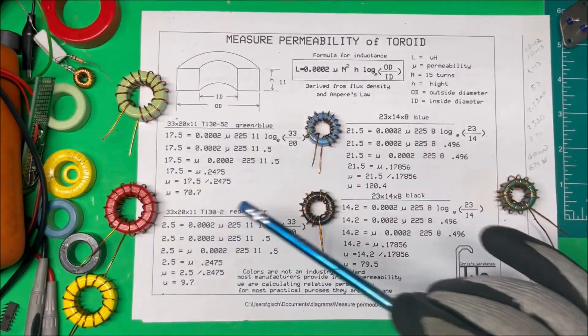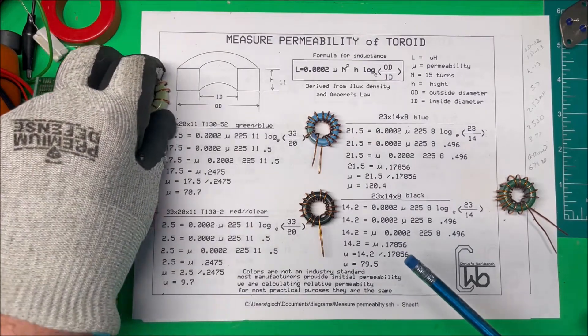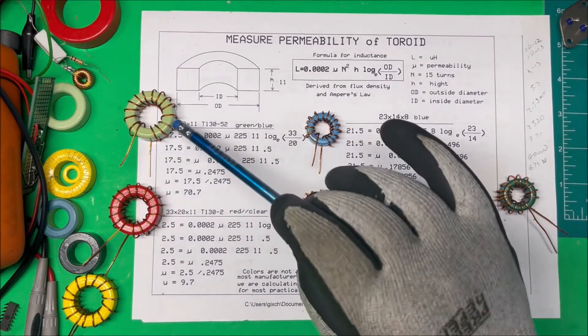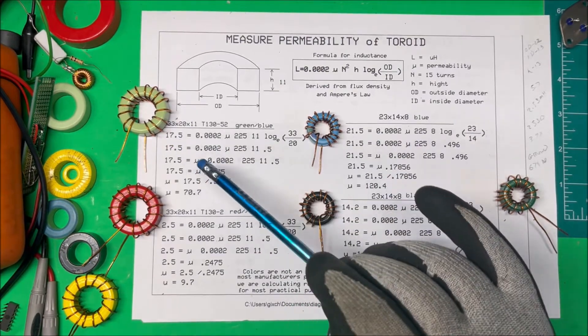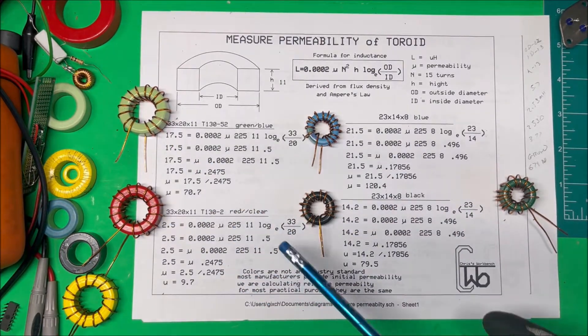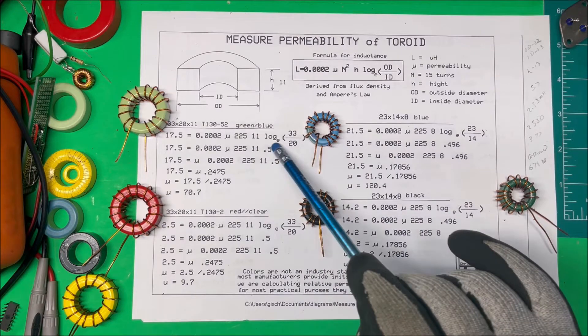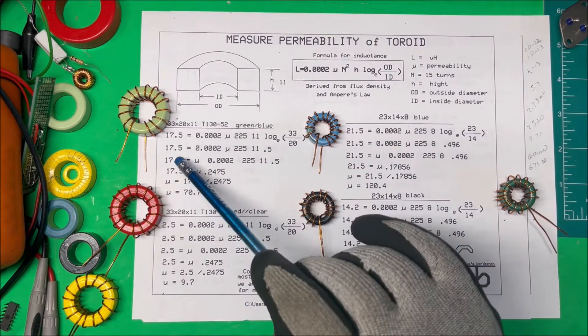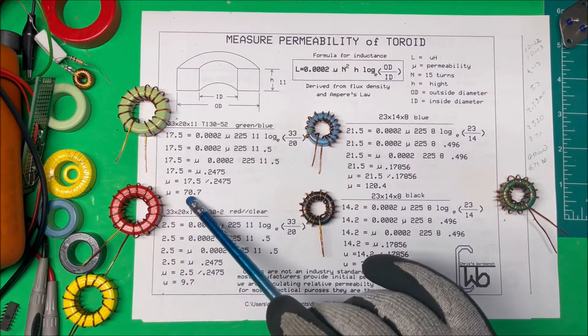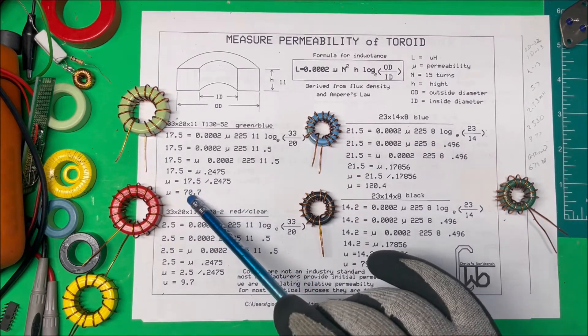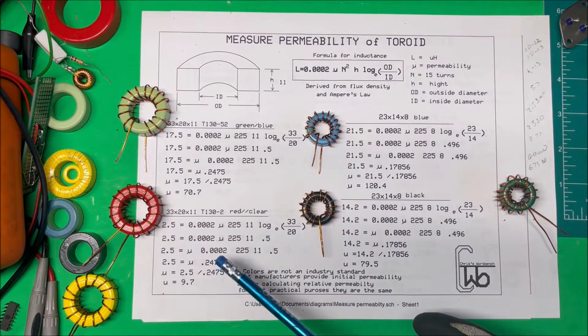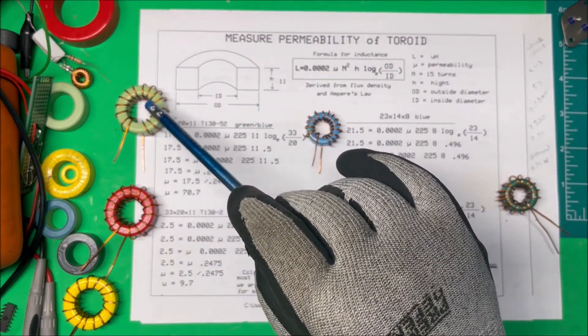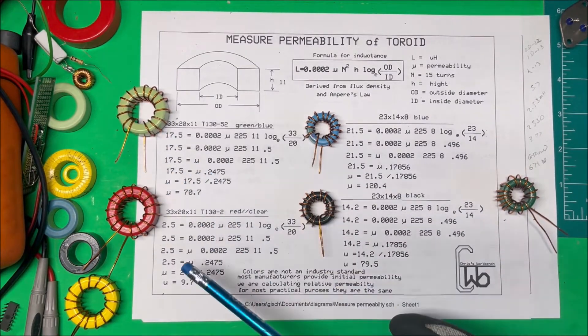This one here is a green-blue coil. Testing it, it came out to 17.5 micro-Henry's. We multiply all these together and take that number and divide that into our 17.5, and that comes out to 70.7. So the permeability is 70.7, and in the datasheet I think it was between 70 and 75 permeability.